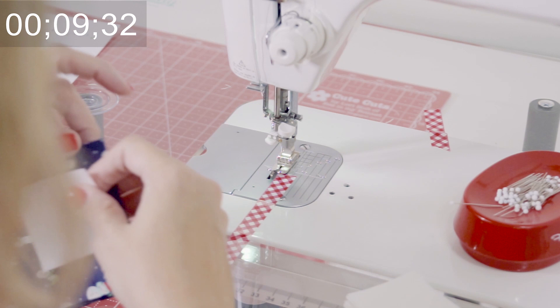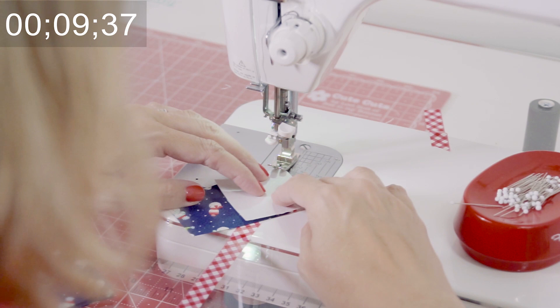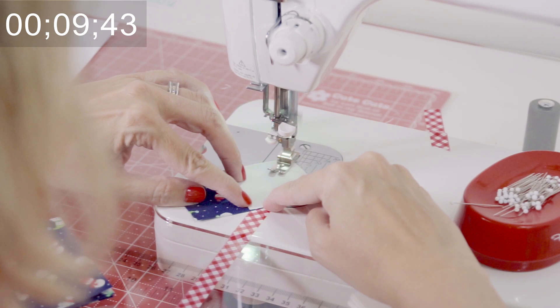For my flying geese, I have my tape centered with the center of my needle. So I can just place the corner of my square on that line.